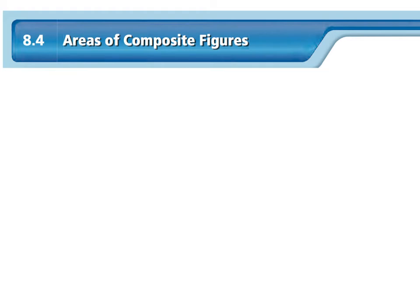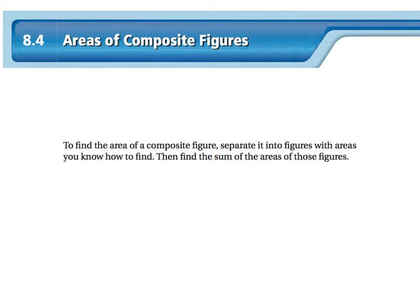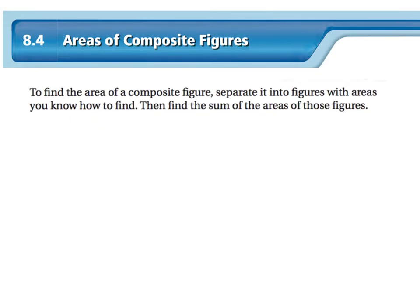In section 8.4, we're going to talk about the area of composite figures. It's just once again, cutting each shape up and then finding the area of each part. So in 8.4, to find the area, you're going to separate it into figures with areas you know how to find. Then you find the sum of all of those areas.